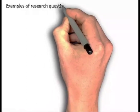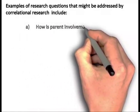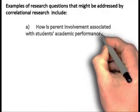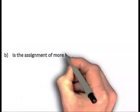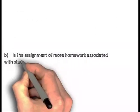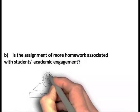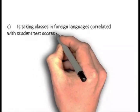Examples of research questions that might be addressed by correlational research include: How is parent involvement associated with students' academic performance? Is the assignment of more homework associated with students' academic engagement? Is taking classes in foreign languages correlated with student test scores in mathematics?